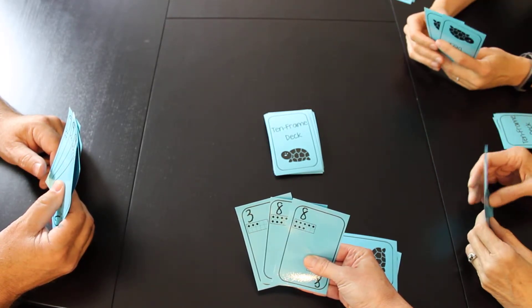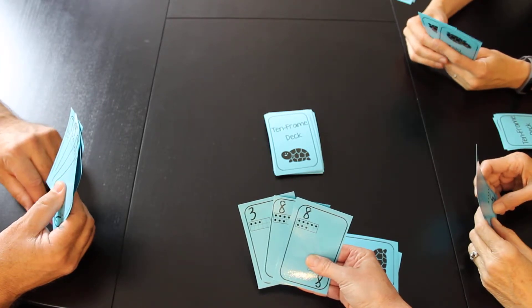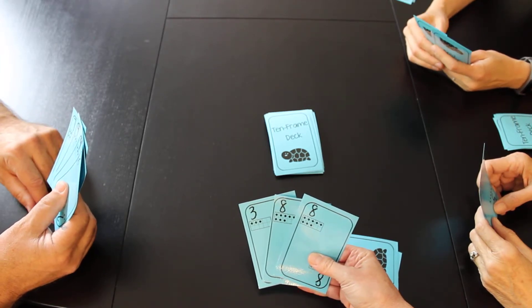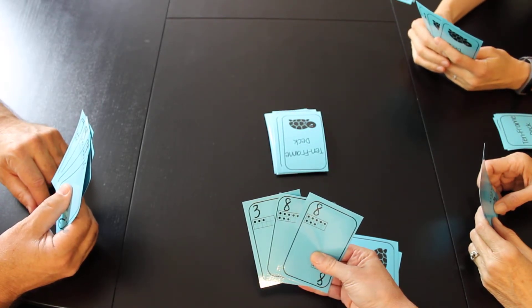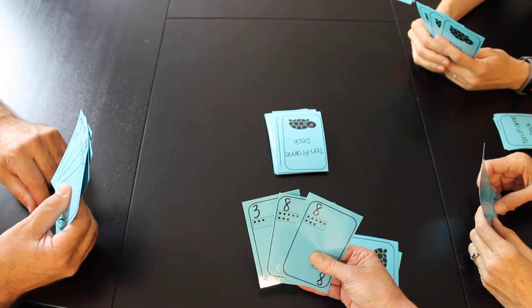Which means when she makes a pair with that she wins the game. Randy, do you have a one? Go fish. Cheryl, do you have a six? Go fish.